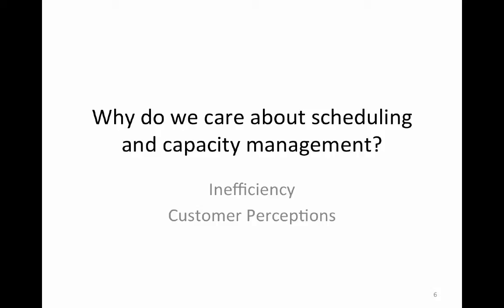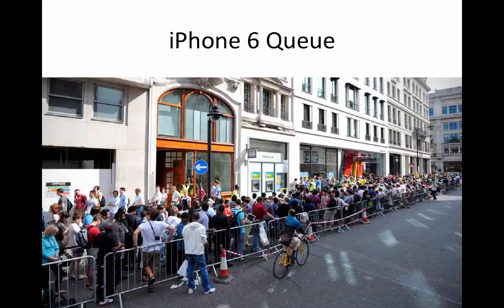So why do we care? There's inefficiency and then there's customer perceptions. If we have inefficient processes, we're not seeing as many people or processing as many things as we should through an efficient process, so ultimately your throughput gets affected. And then there's customer perceptions — if we have long waits, do customers get upset? Do they leave the business? Do they take their business somewhere else? Here's an example of a queue: the iPhone 6 line, just a really obnoxious line waiting for that phone.